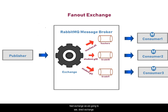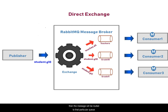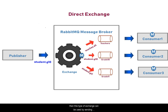The next exchange type is direct exchange. Unlike fanout exchange, this exchange uses routing key and binding key to route messages. Once the message reaches the exchange, it compares the routing key with the binding key of all queues bound to it. If there is a match, the message will be routed to that particular queue. For example, if you want to publish messages only to 10th grade students, this type of exchange can be used by sending the appropriate routing key along with the message.